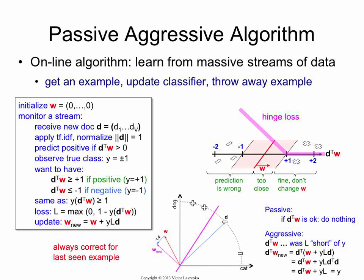So this is always correct for the last example that you have seen. And I guess in practice, and this is actually related to your question, so the hinge loss can get unbounded. By the way, plus one, minus one,